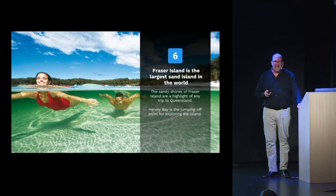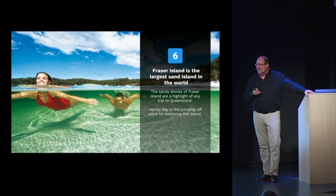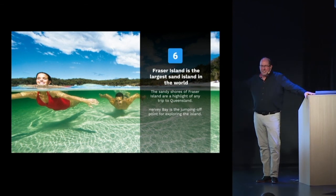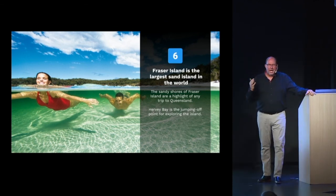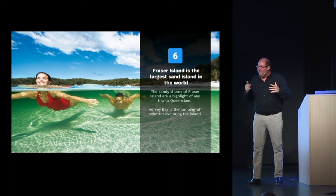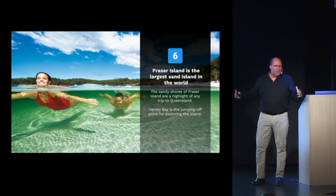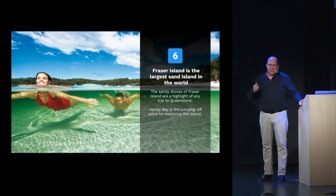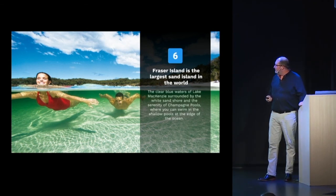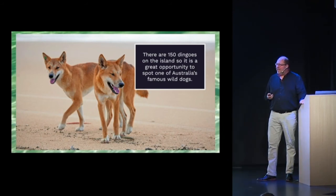Fraser Island is the largest sand island in the world and my favorite place in the entire country. You can actually drink the water as you swim in the small pools and rivers on this island — it's that beautiful and pure. I remember waking up one morning at 4:30 am to incredible vibrations on the land, and went to the beach to find a huge group of wild mustangs running up and down the beach. It's also one of the places where you can see some of the last remaining dingoes in Australia.